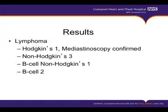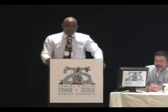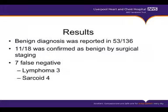Looking at the lymphoma diagnoses: we had one Hodgkin's, however the pathologist wouldn't commit completely, so they asked for more tissue. We did a mediastinoscopy which confirmed the diagnosis of Hodgkin's. There were three non-Hodgkin's lymphomas, one B-cell non-Hodgkin's lymphoma, and two B-cell lymphomas. We got a benign diagnosis in 53 out of these 136 patients. 18 of these patients went on to surgical staging, mainly mediastinoscopy. In one patient, we did a VATS where we took a lung biopsy and a lymph node, which came back as sarcoid, and in one patient we took an axillary node out. There were 11 confirmed benign diagnoses, and there were seven false negatives — three for lymphoma and four for sarcoid.